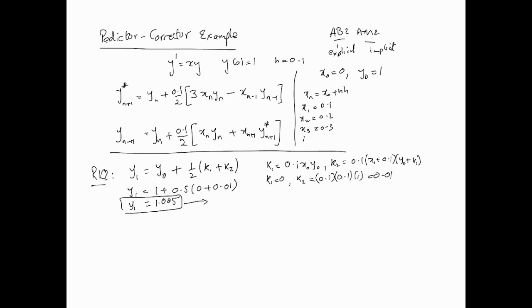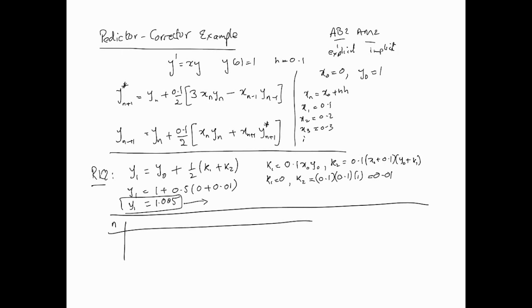Once we have our starter, we can proceed with the predictor-corrector iterations. Let me set up a table to organize the calculations. The columns will be: n (iteration index), x, y_n* (the predictor), and y_n (the corrected value). Our first meaningful iteration starts at n = 1.